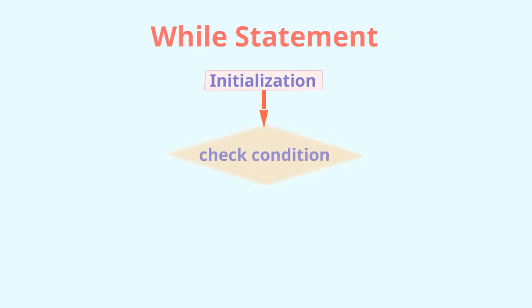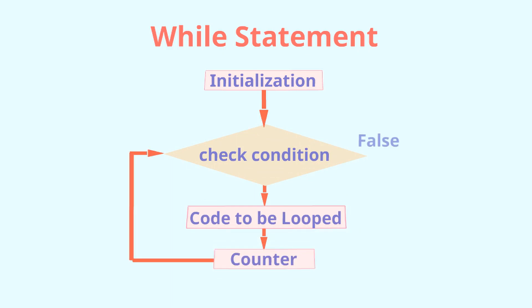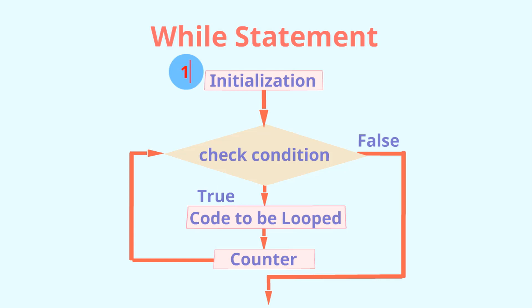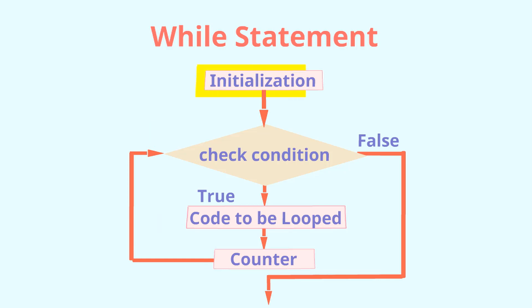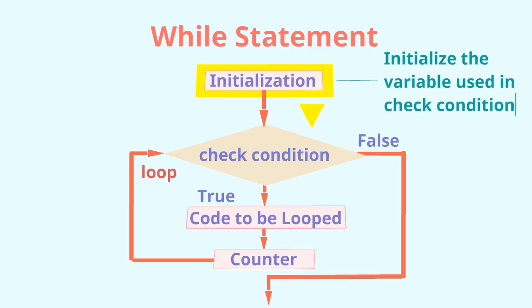Let's start by learning how to write a while statement. A while statement is a looping construct that executes a block of code while a condition is true. It has four parts. The first is initialization, which is actually outside the loop. Before you enter the while loop, you need to ensure that you have a counter variable or condition variable initialized so you can enter the loop in the first place.